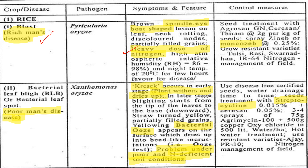The main symptom is spindle-eye shaped, board-shaped lesions. The main control is also important. The pathogen is Pyricularia. If you are confused about which subdivision Pyricularia belongs to, you can see my last video (video number 3), where I have a clear table showing the classification.